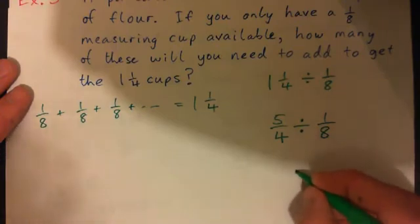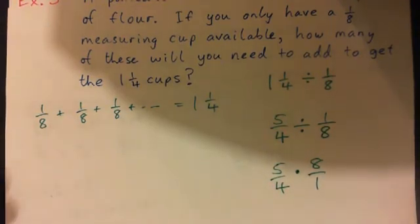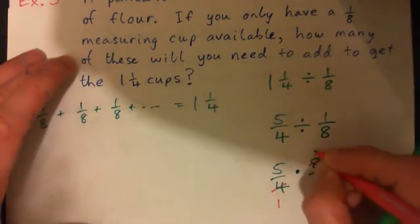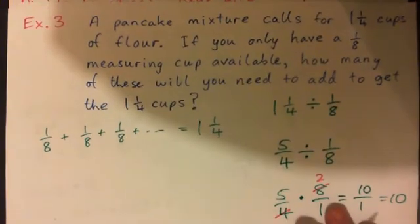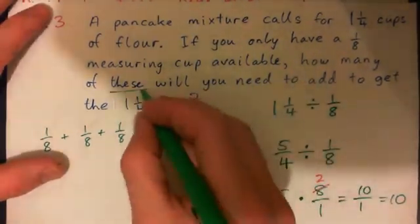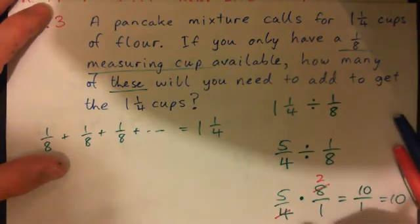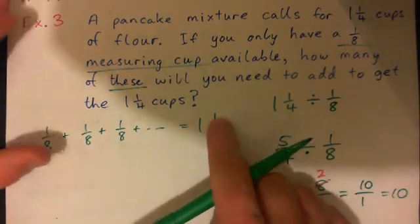All we need to do is multiply by the reciprocal. So it's 5 over 4 times 8 over 1, and we can cross-cancel common factors: 4 into 4 goes once, 4 into 8 goes twice. Now we get 5 times 2 is 10 over 1 times 1 is 1, so we get 10. The question was how many eighth measuring cups do we need? The answer is 10 — we need 10 one-eighth cups, which gives the 1 and 1 quarter cups of flour.